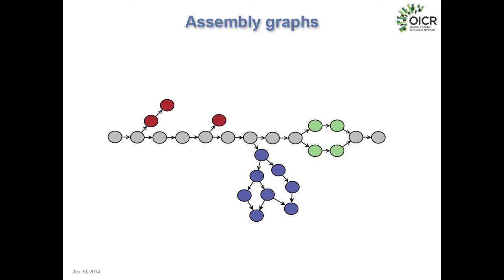I'm going to start with this picture — it's a little cryptic. This is an assembly graph, or at least how I think of them in my mind. An assembly graph is a way of representing sequences and their relationships to each other. Each vertex or node in the graph is some sequence, and we put an edge between two vertices if they share some overlapping sequence. The idea is that edges represent sequences that could be merged together to perform the assembly. There are four different colors in this graph — gray, red, light green, and blue — all depicting different structures that appear in assembly graphs. I'll return to this picture later and describe what those structures tell us about the genomes we're working with.